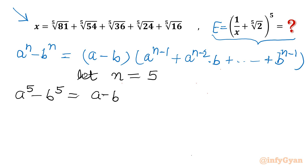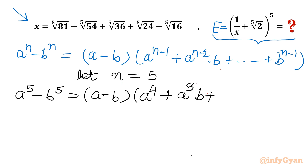With n = 5, the left-hand side is a⁵ - b⁵, and the right-hand side is (a - b) times (a⁴ + a³b + a²b² + ab³ + b⁴).